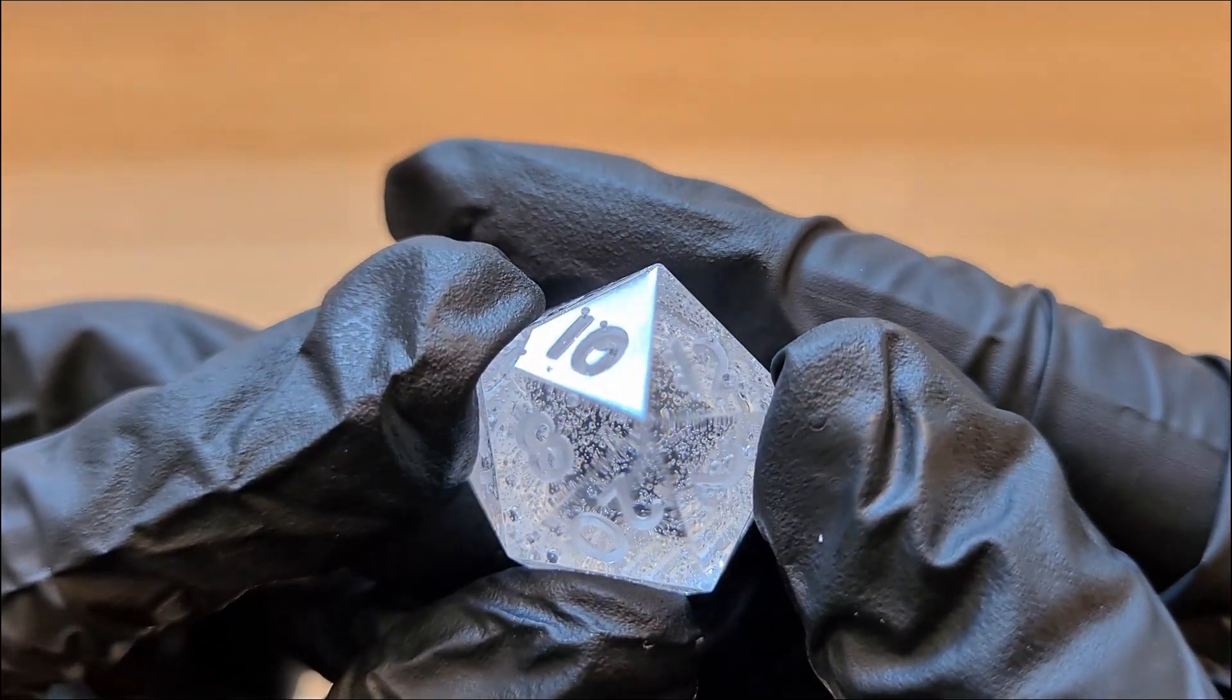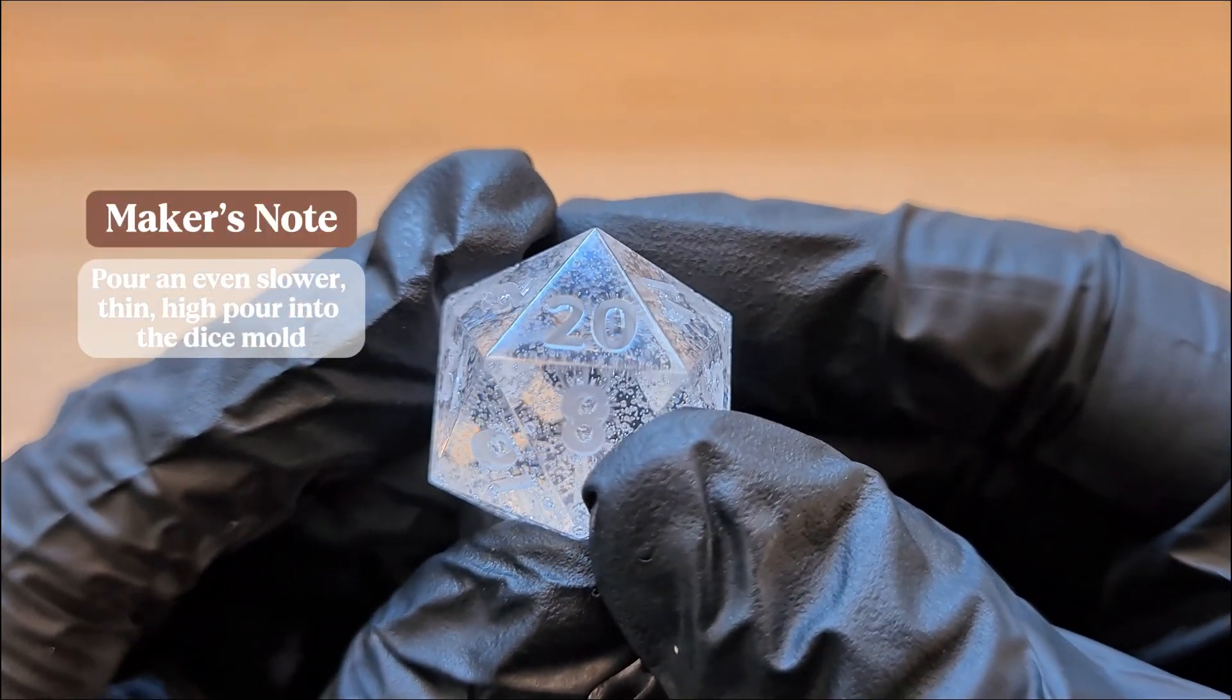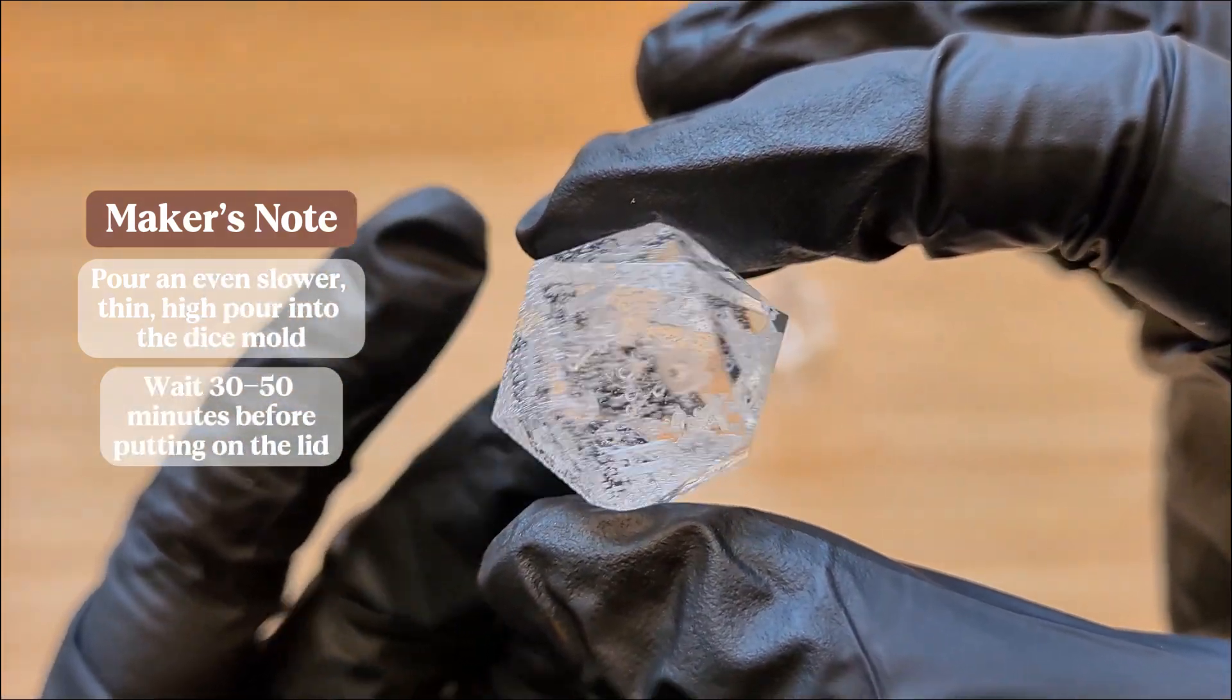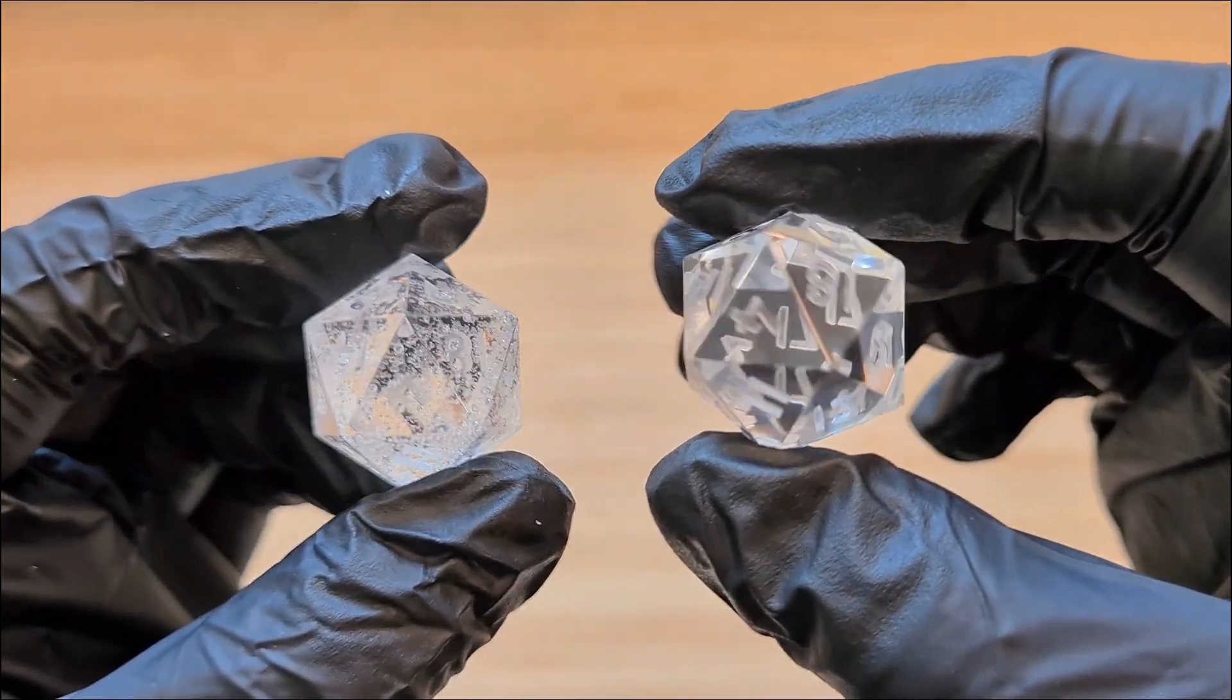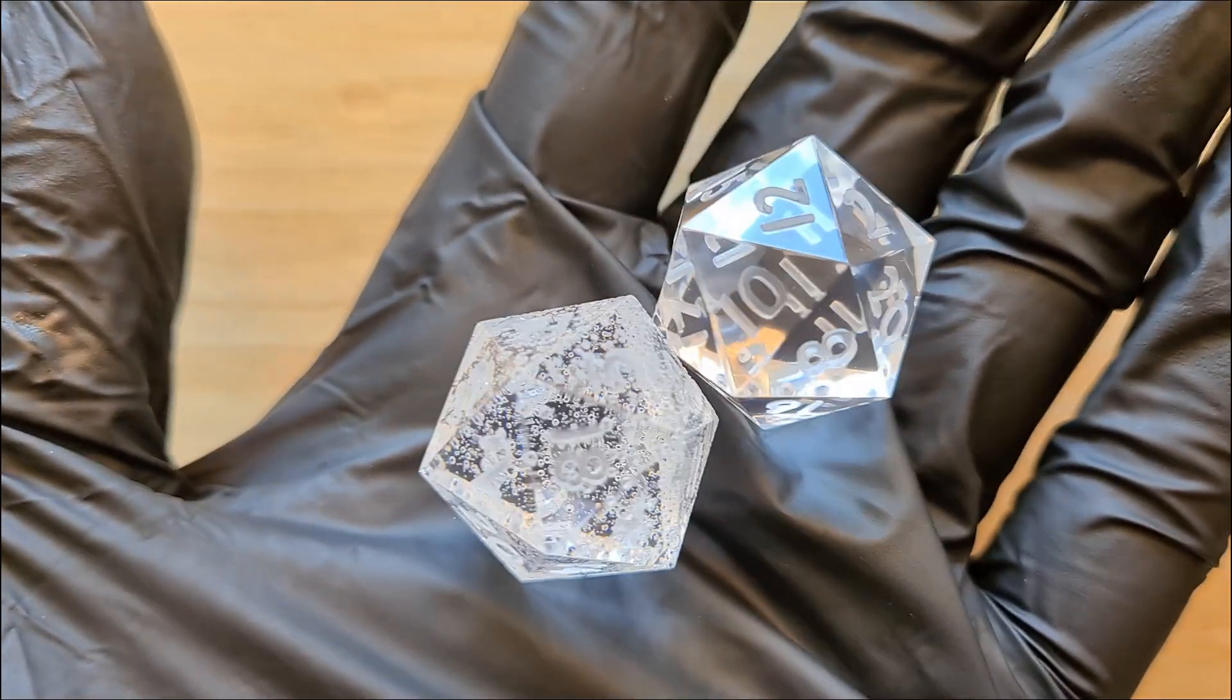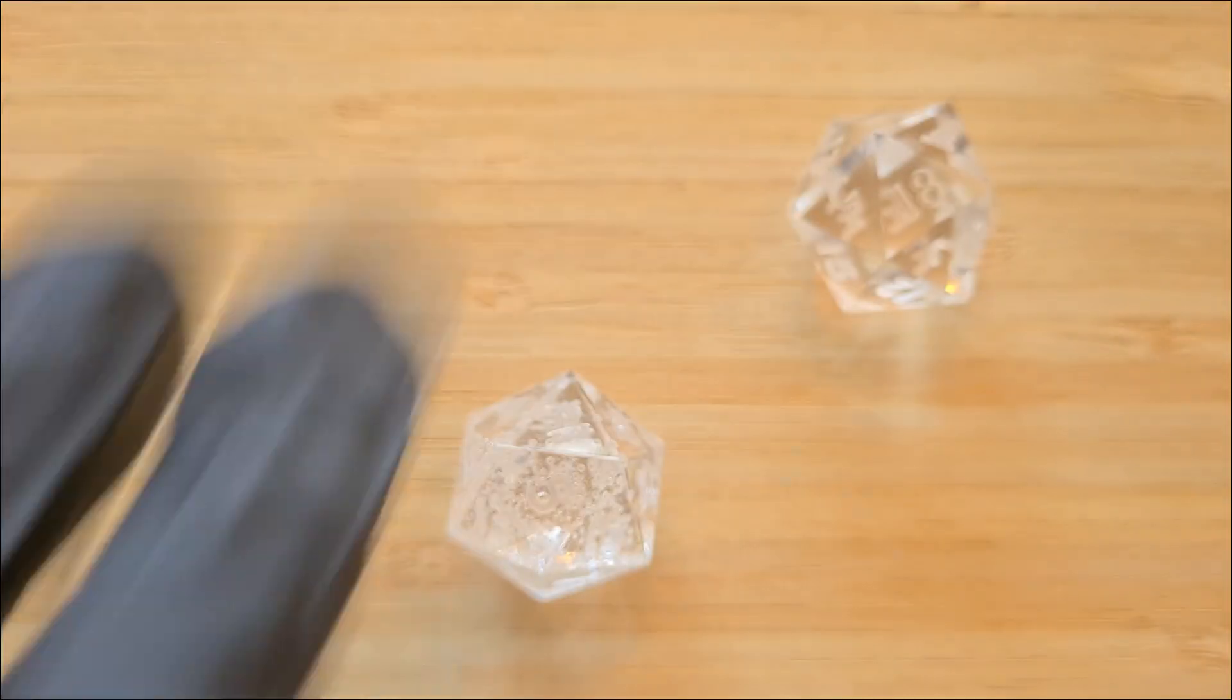Some things that I would have changed if I would do this process all over again, is to firstly pour the resin way slower into the dice mold, and then also wait longer for more bubbles to raise to the surface before putting the lid on. So to ask the question again, is it hard to make bubble free dice? I would say yes, if you don't have a pressure pot it is really difficult, but you can still make some incredible, workable, rollable dice.